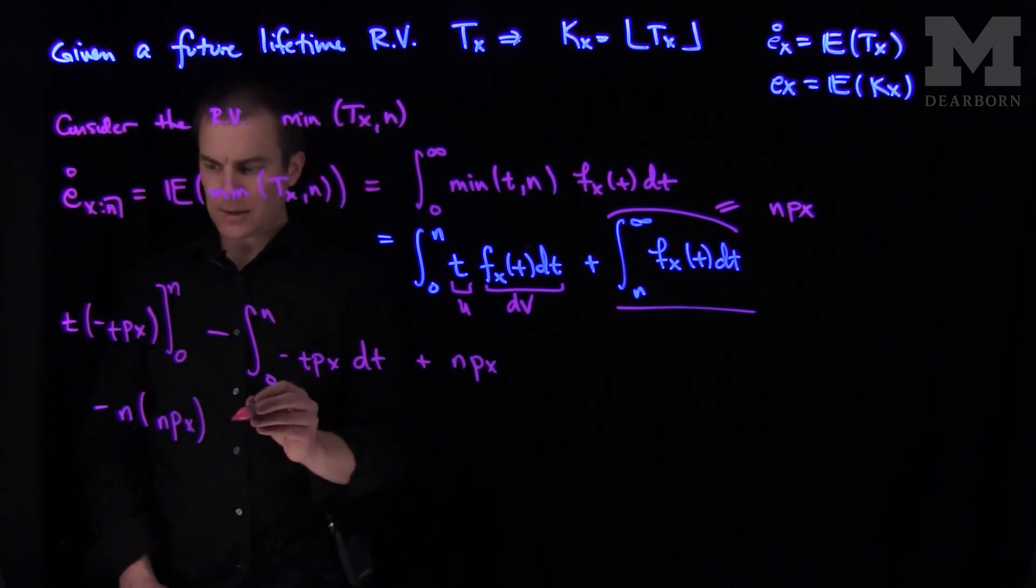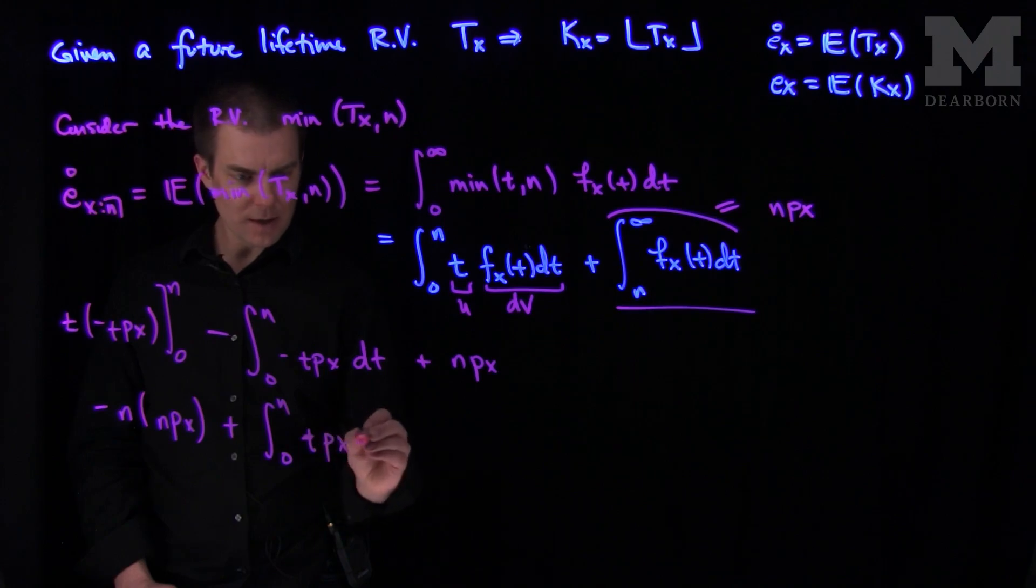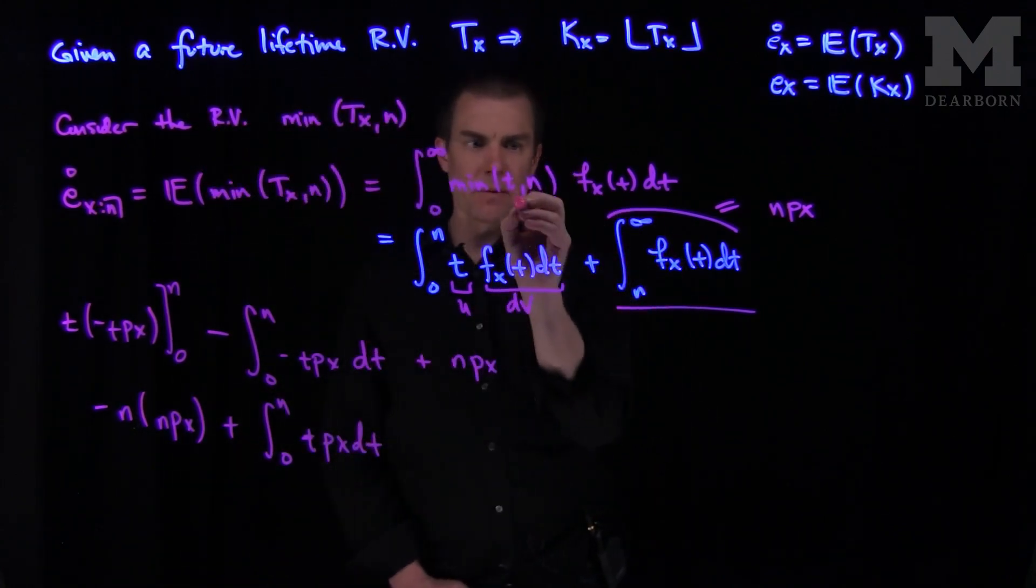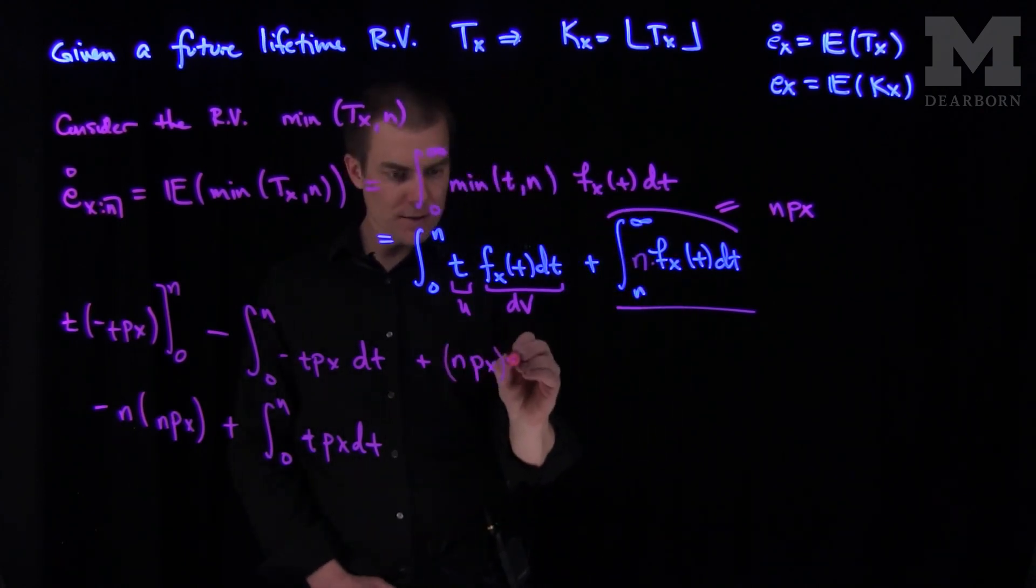And then we'll have a plus integral from zero to n of t px dt. And we're missing one thing over here. We're missing the minimum of t and n is actually an n.